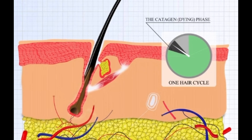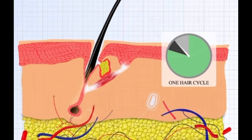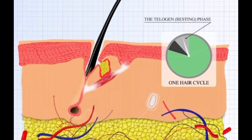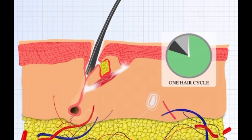The second phase is the Catagen phase, lasting two to three weeks, during which the hair follicle begins to shrink. The last phase is Telogen, the resting phase, which lasts two to four months, after which the hair falls out and the Anagen phase begins again.